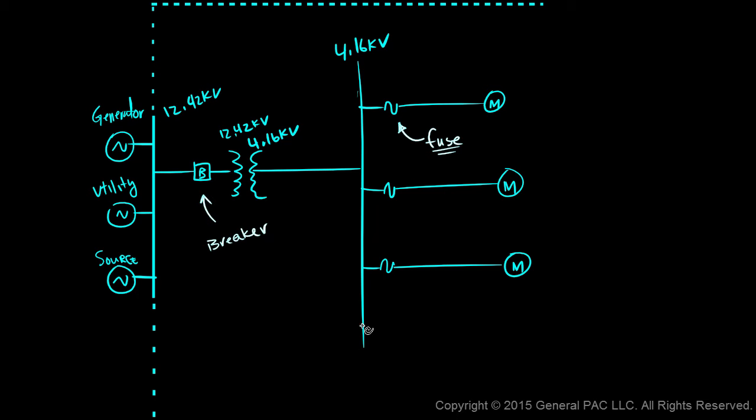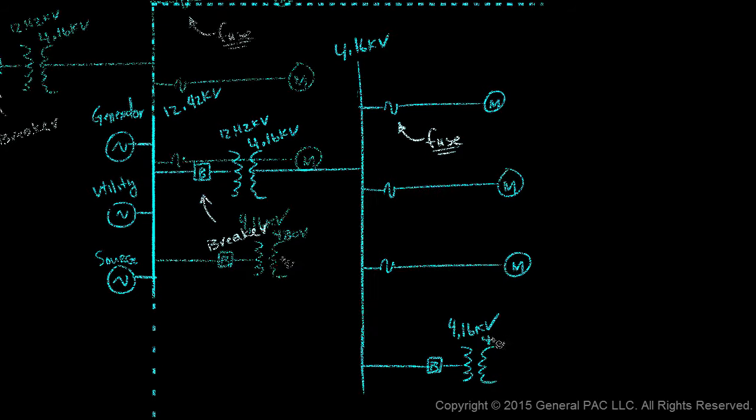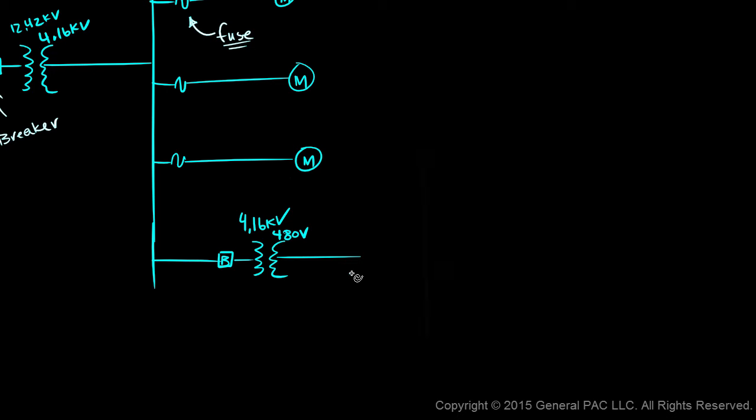And suppose that we have another step-down transformer that's protected by a breaker. But that transformer steps that voltage down from 4.16 kV to 480 volts. And we have another bus that's the 480 volt bus, and taps off of the 480 volt bus which are fused that's going to our auxiliary motors or our auxiliary equipment.